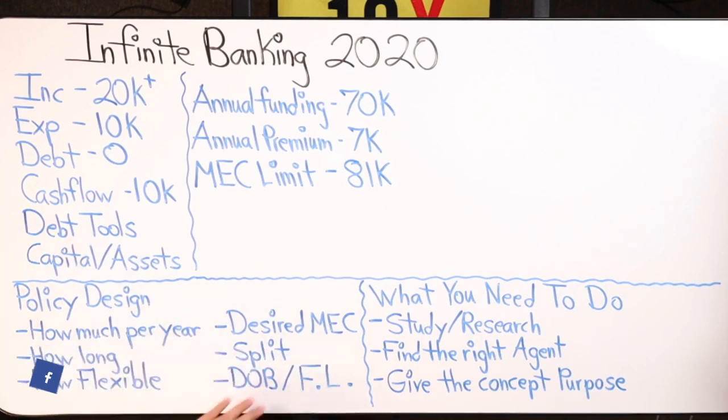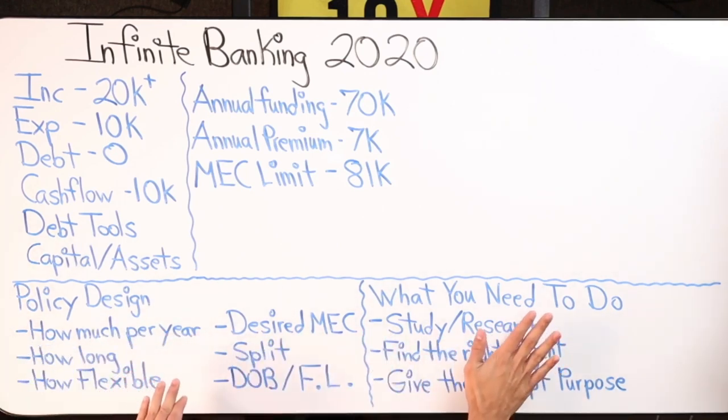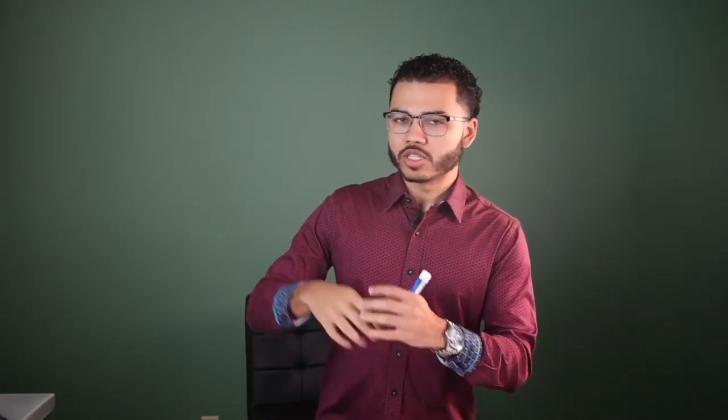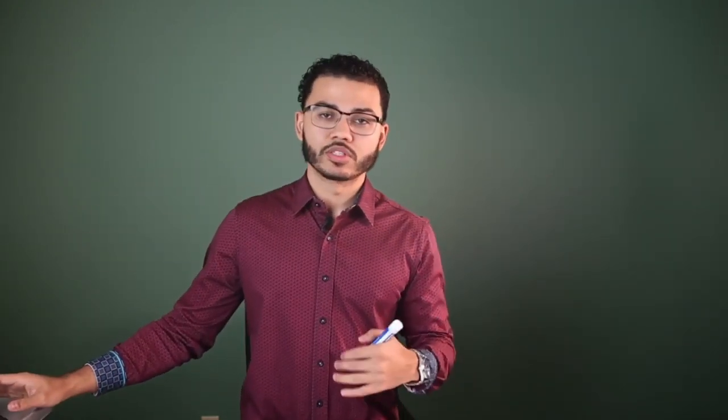These are some critical questions that are going to help your agent create something just for you. Understand that how you talk to the agent is how they're going to design the policy. You really do want to be educated to a degree on the concept — you don't want to go in blind and just have the agent do everything, because they may not provide the best product for you. Study, understand the concept, and be able to provide these figures to the agent so they can come back with the right information.